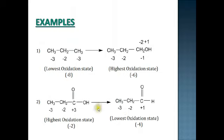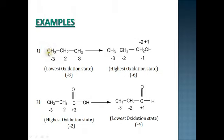In the first example, we have a compound called propane. Propane has a left terminal carbon, a central carbon, and a right terminal carbon. For the left terminal carbon: carbon-carbon bonds do not alter oxidation state, so that contribution is zero. Three carbon-hydrogen bonds each decrease the oxidation state by 1, giving a net oxidation state of minus 3.